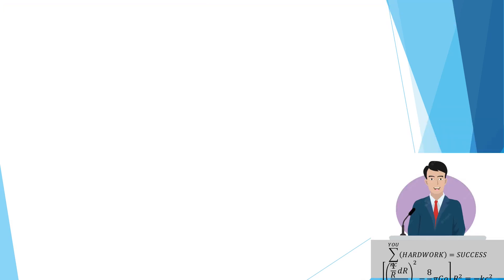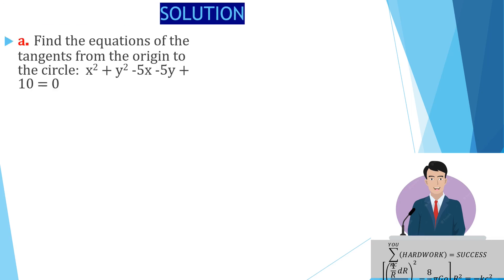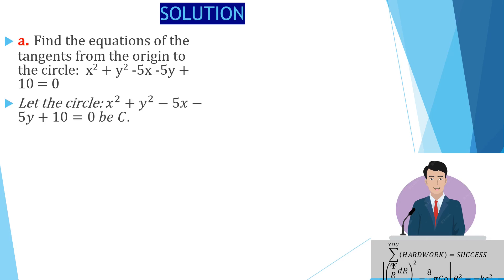Let's dive right into the solution. Part A asks us to find the equations of the tangents from the origin to the circle. We start by calling that circle C. Fundamentally, for every coordinate geometry question, there are two things you should be able to do: first, get the center of the circle, and second, get the radius of the circle.